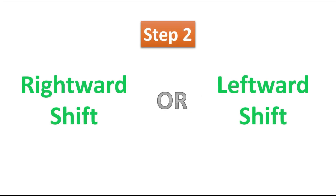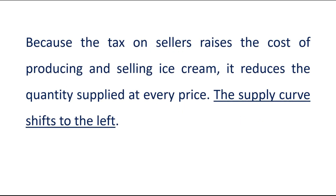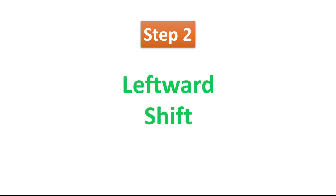Now let's move on to Step 2: whether the supply curve will shift towards the right or towards the left — basically, whether supply will increase or decrease. Because the tax on sellers raises the cost of producing and selling ice cream, it reduces the quantity supplied at every price, and that is the reason the supply curve will be shifted towards the left. When a tax is imposed, it increases the overall cost of production, which means lower profits for firms, so firms will decrease supply. The supply curve shifts to the left.